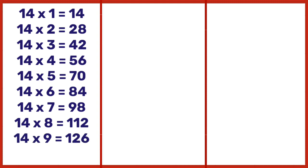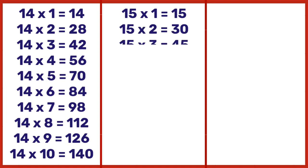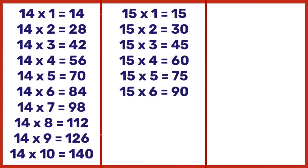14 nines are 126, 14 tens are 140. 15 ones are 15, 15 twos are 30, 15 threes are 45, 15 fours are 60, 15 fives are 75, 15 sixes are 90, 15 sevens are 105, 15 eights are 120.